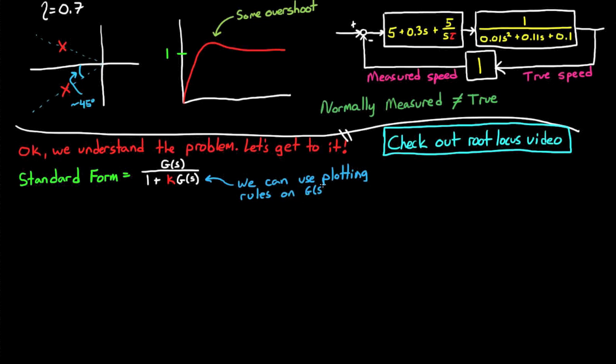In our case, the gain is tau. And our g of s, which is the total open loop system, is the combination of our PID controller and the plant. I've circled it in green up above.